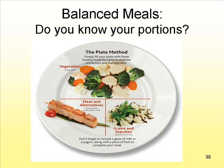Balanced meal — do you know your portions? Your balanced meal plate should look like this: half of your plate should be your vegetables — the free vegetables — and you can have as much as you want. Simply fill your plate with these healthy foods to help manage your blood glucose. One quarter of your plate should be your protein; we do want your protein at breakfast, lunch, and supper. And one quarter of your plate should be your grains and starches. You can always include a glass of milk or yogurt to complete the meal.